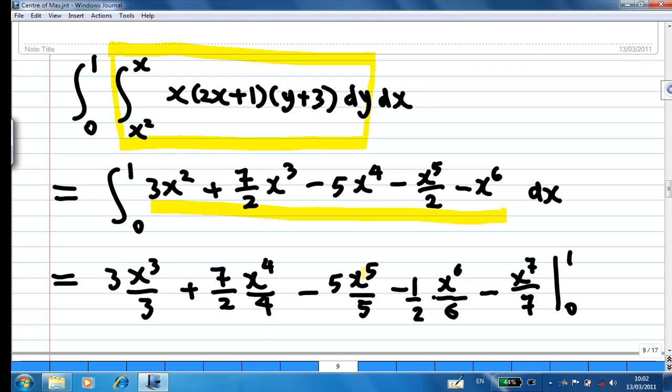Integrate x⁴, you get x⁵ over 5. Integrate x⁵, you get x⁶ over 6. Integrate x⁶, you get x⁷ over 7. Together with their coefficients, put in x equal to 1 and x equal to 0.